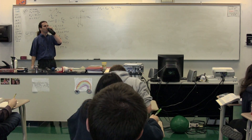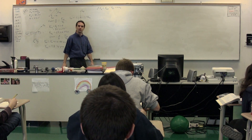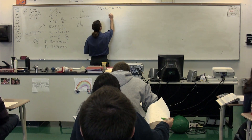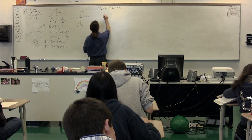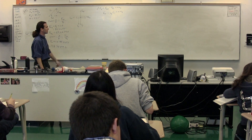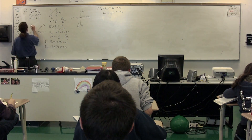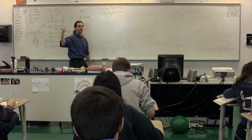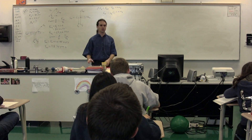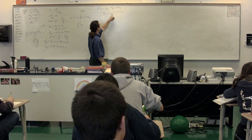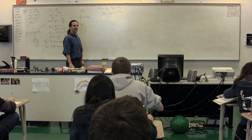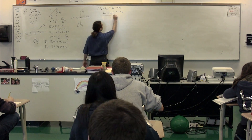Substitute mu k times force normal. Good. What's mu k called? Coefficient of kinetic friction. We have the coefficient of kinetic friction times force normal, which is the same as the force of kinetic friction. We're trying to find the coefficient of kinetic friction. Force applied in the x-direction we know, we don't know the coefficient of kinetic friction, and we don't know the force normal. So we put it in the equation holster and go to the y-direction next.